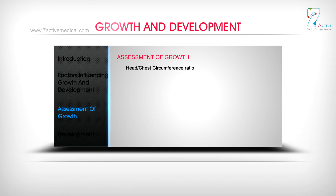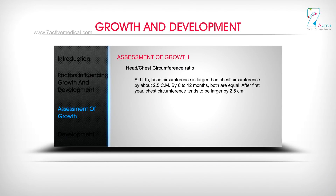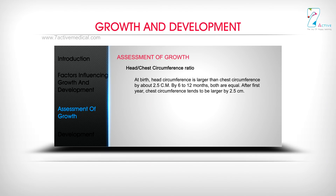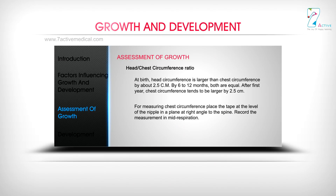Head and Chest Circumference Ratio: At birth, head circumference is larger than chest circumference by about 2.5 cm. By 6 to 12 months, both are equal. After the first year, chest circumference tends to be larger by 2.5 cm. For measuring chest circumference, place the tape at the level of the nipple in a plane at right angles to the spine, and record the measurement in mid-respiration.